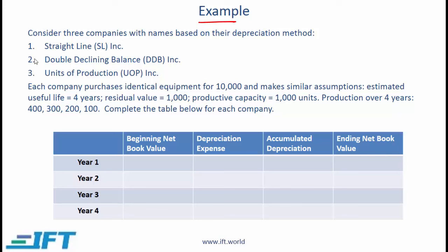Let us work through an example illustrating all three methods. We have three companies: one called Straight-Line, one called Double Declining Balance, and one called UOP — each using the depreciation method aligned with their name. Each company purchases equipment for 10,000 with an estimated useful life of four years, residual value of 1,000, and productive capacity of 1,000 units. Production quantities are given over four years, and we need to complete the table for each company.